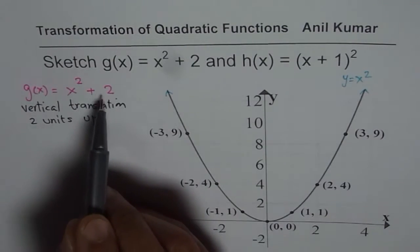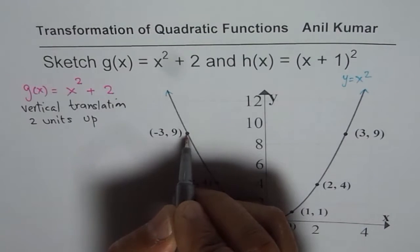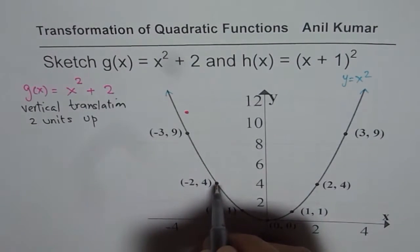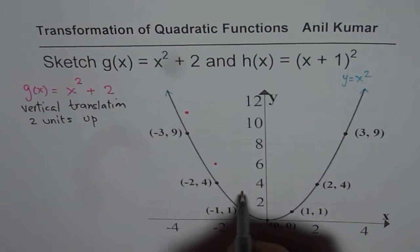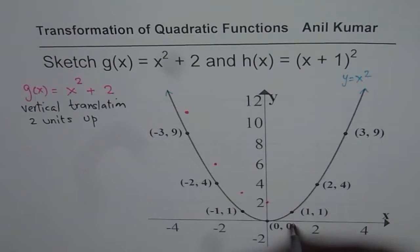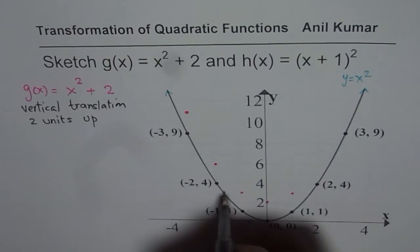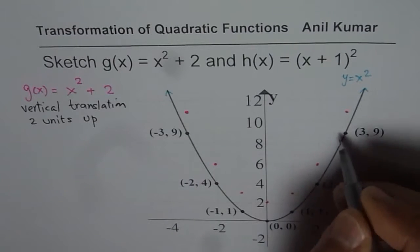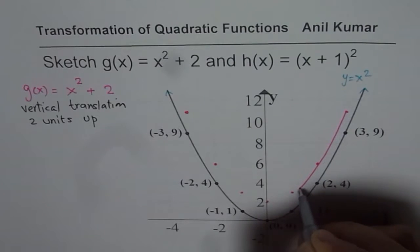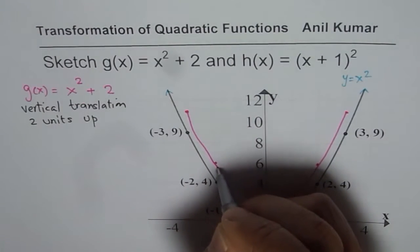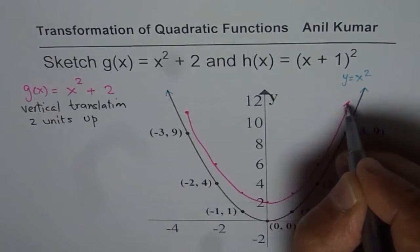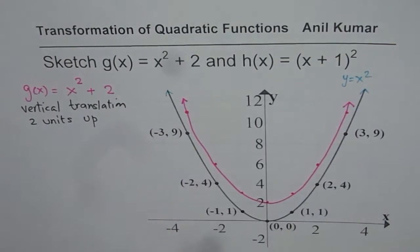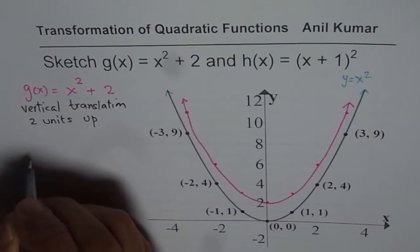Starting from the original function y equals x squared, we translate each point 2 units upwards. So the point (−3, 9) moves to (−3, 11), (−2, 4) moves to (−2, 6), (−1, 1) moves to (−1, 3), and (0, 0) moves to (0, 2). Similarly the right-side points move up by 2. Joining these points gives you the new parabola extending upwards — mark arrows on it. That is how you get the first transformed function.